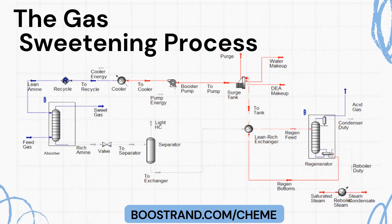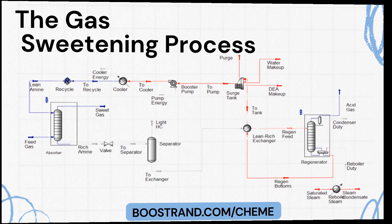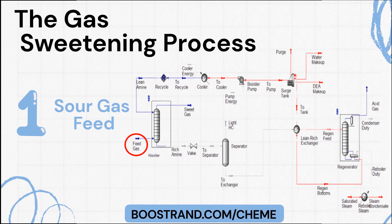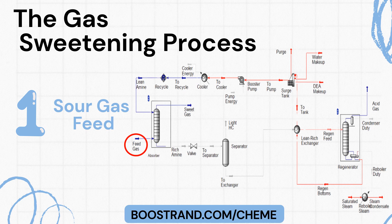The amine gas sweetening process is a sophisticated sequence of operations involving several key components, each designed to fulfill a specific role. Sour gas is introduced, containing H2S and potentially CO2.